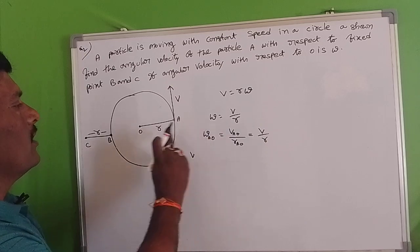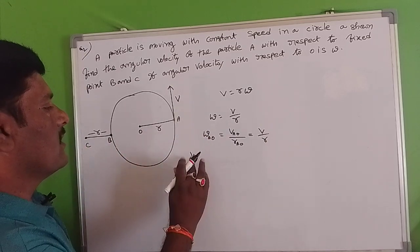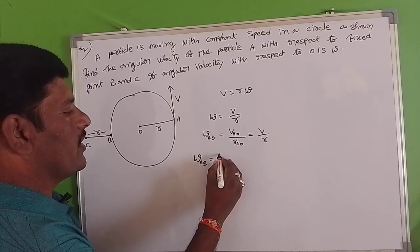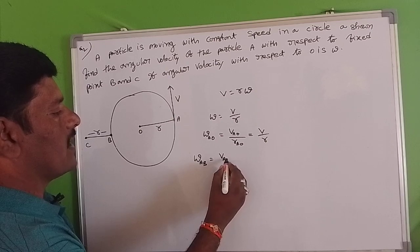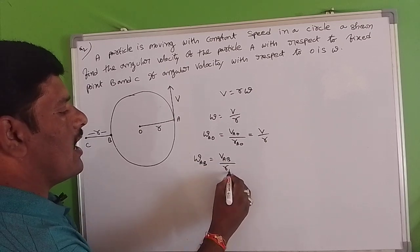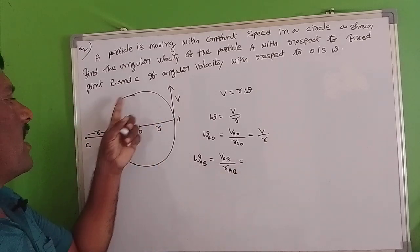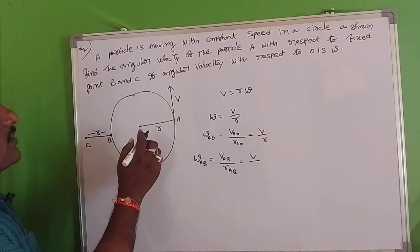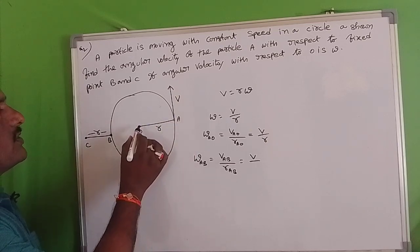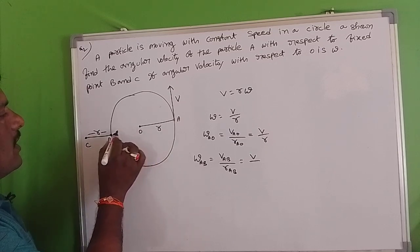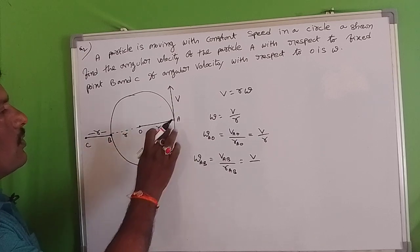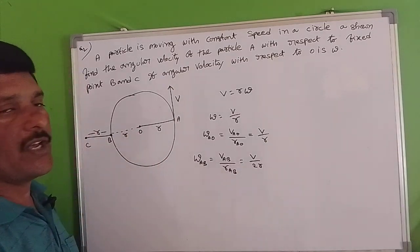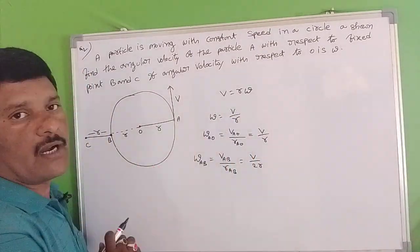Now we will find out the angular velocity at B — that is, angular velocity of A with respect to B. We can write: omega_AB equals velocity of A with respect to B divided by R_AB. V_AB is the velocity V. For R_AB, the distance from A to B: A to O is R, and O to B is also R, so the total perpendicular distance from A to B is R plus R equals 2R.